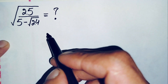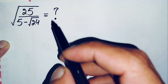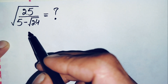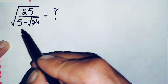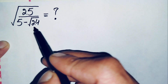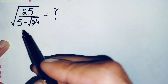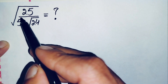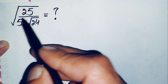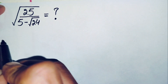Hello everyone, welcome back to Math Explorer. In this video I'm going to solve and find the value of this interesting square root math problem, which is the square root of 25 divided by (5 minus the square root of 24). To solve this, first we will simplify the number inside the square root, and then we will take the square root of that simplified number.